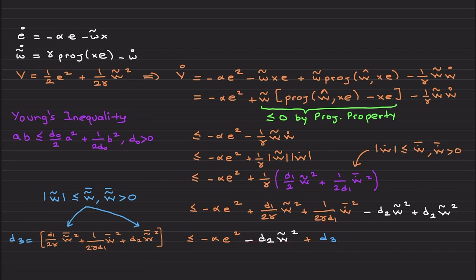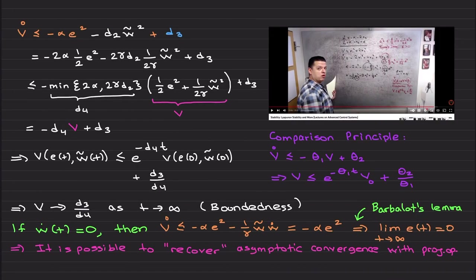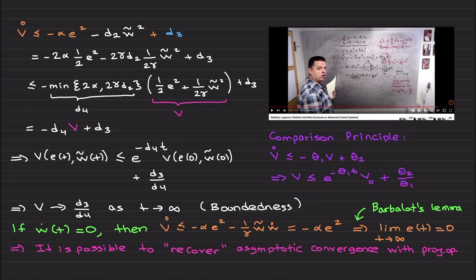So we have these nice negative terms plus this positive constant d₃. Moving forward, I apply the comparison principle — first covered in the Lyapunov stability lecture on advanced control systems. It states that if v̇ ≤ −θ₁·V + β₂, then V is upper bounded by the expression involving the exponential decay plus the steady-state term. If you haven't watched that video, please do — it is a very condensed and precise coverage of what you need for Lyapunov stability analysis.